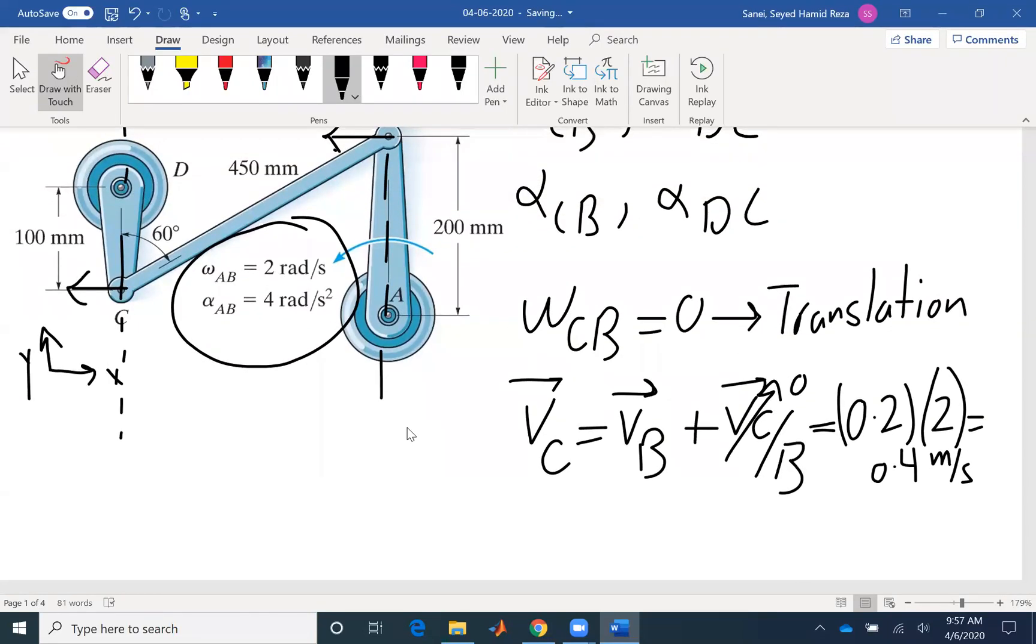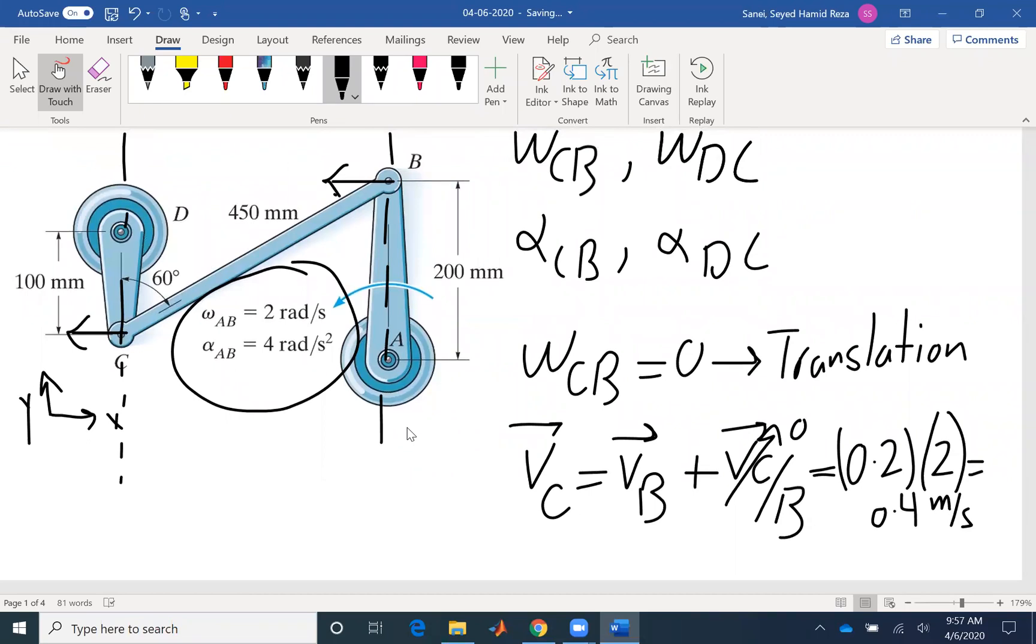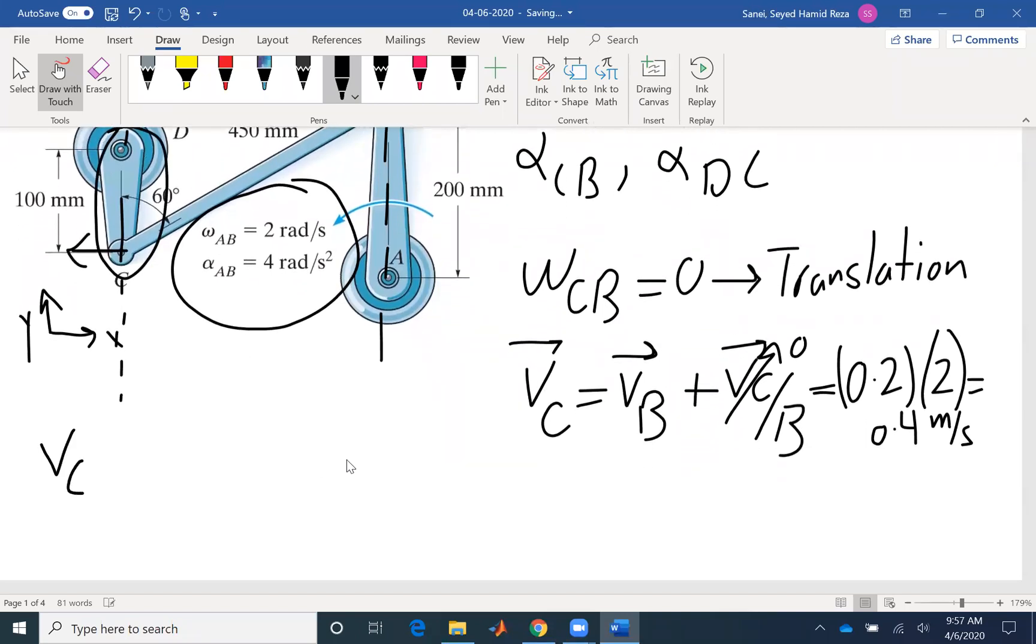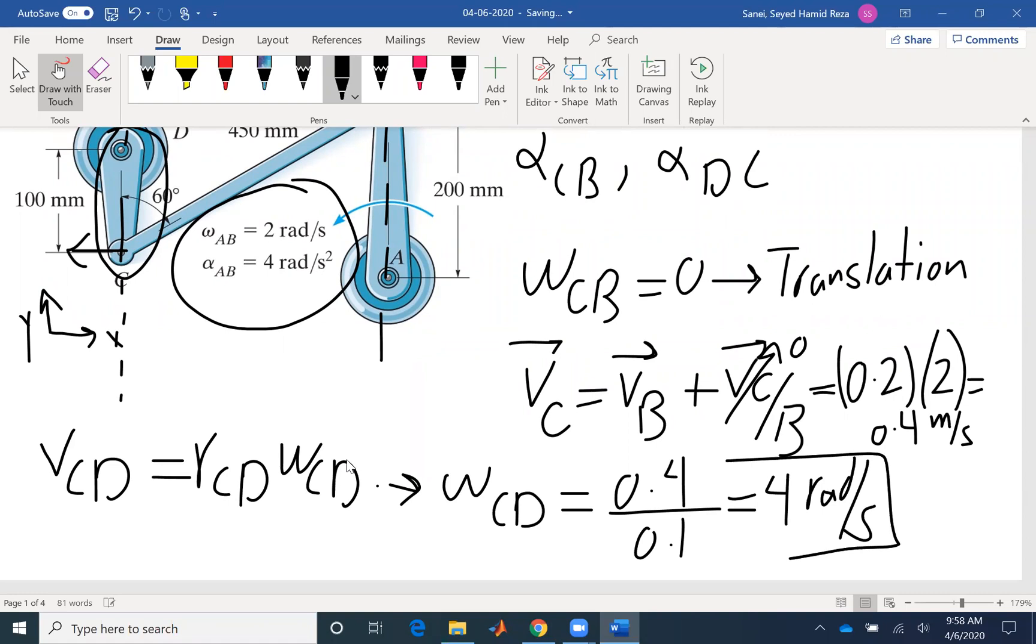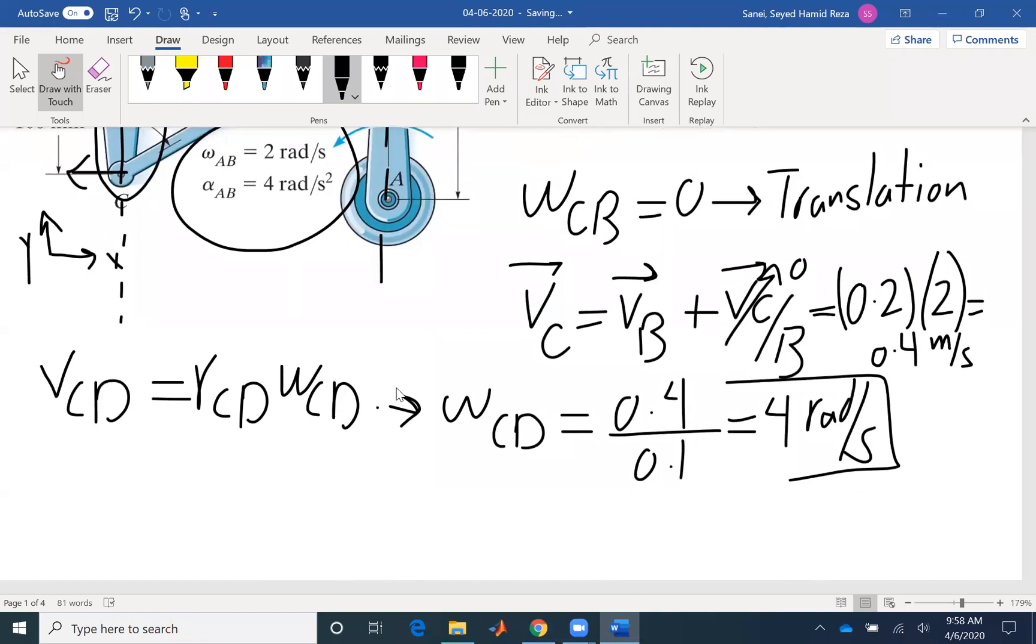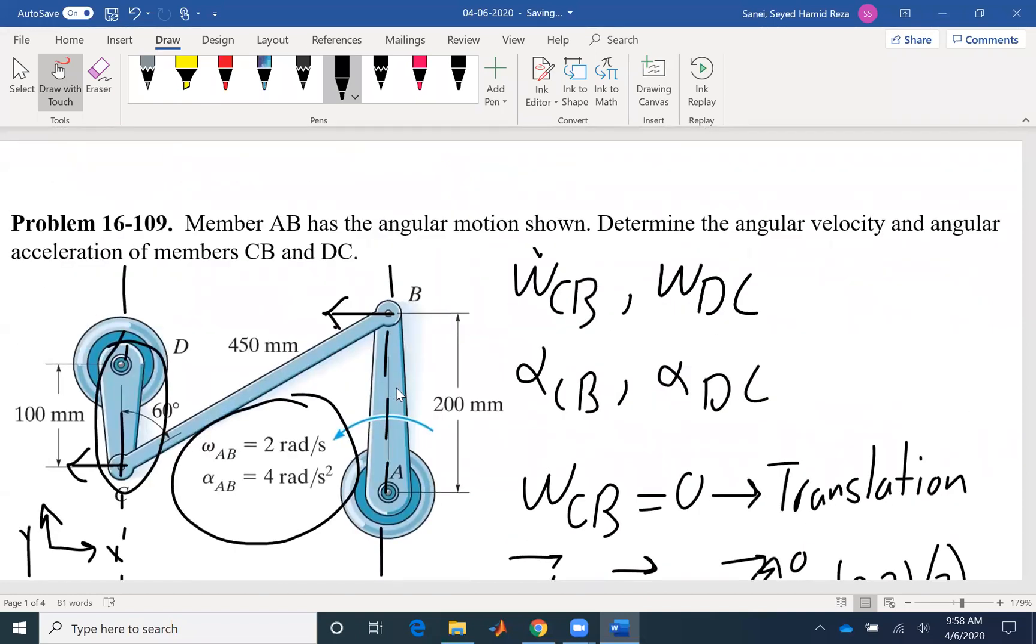So once we have the velocity at C, we can use the information about this link, link CD, to find omega CD. VCD is simply R_CD times omega CD. So omega, writing the scalar formulation, is 0.4 divided by R which is 0.1. So it would be 4 radians per second. That's the magnitude of omega. So we found both of our angular velocities.